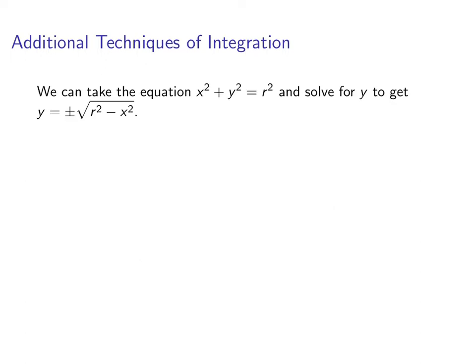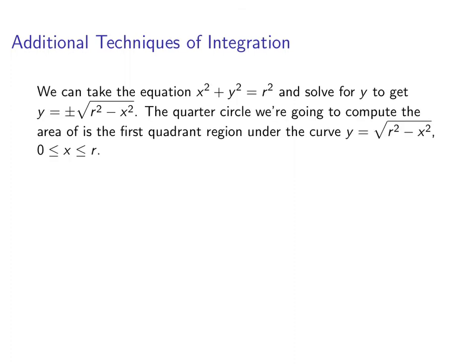Now we can take the equation x squared plus y squared equals r squared. If we solve for y, we get y equals plus or minus square root of r squared minus x squared. Now that plus or minus is actually important. The plus will give you the top half of the circle, the minus will give you the bottom half. The quarter circle we're going to compute is the area of the first quadrant region under the curve y equals square root of r squared minus x squared, where x goes between 0 and r.